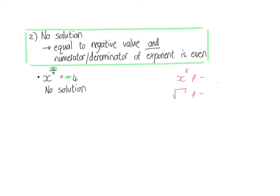So let's now have a look at an example where this is not true. In this example the numerator and denominator of the exponent are both odd, so it can be equal to a negative value. Now I'm going to raise to the power of the reciprocal on both sides and then I'll end with x equal to minus 2 to the power of 3, which I will rewrite as 1 over minus 2 to the power of positive 3, which is 1 over minus 8 or minus 1 over 8.